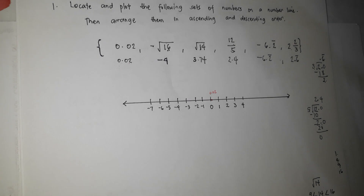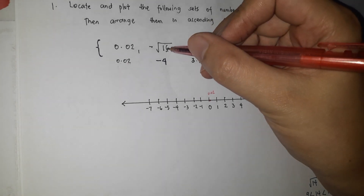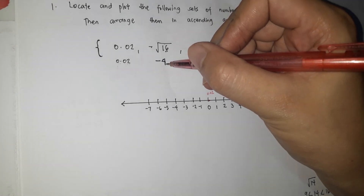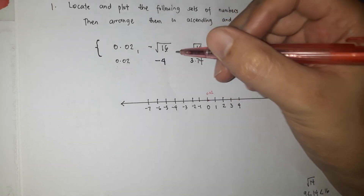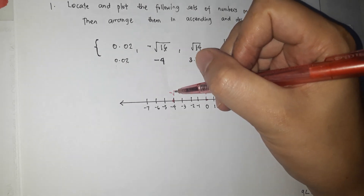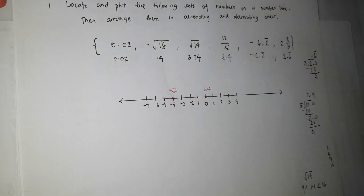Negative square root of 16 equals negative 4, so we plot it exactly at negative 4 on the number line.